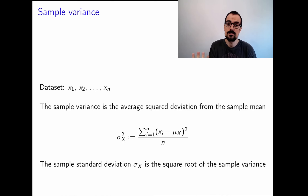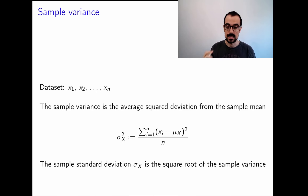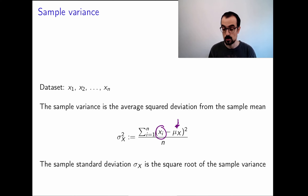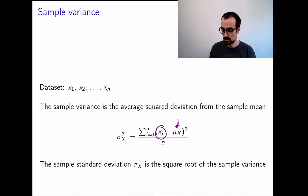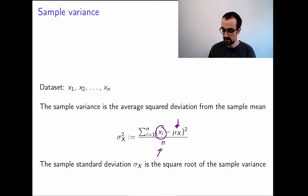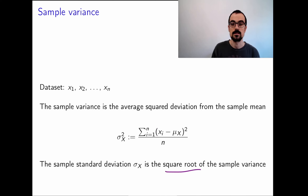In practice, when we have data, how do we compute the variance and standard deviation? The variance is just an expected value, so we take the sample mean of the squared deviations between the data and the sample mean. That gives us the sample variance. The sample standard deviation is obtained by taking the square root of the sample variance.